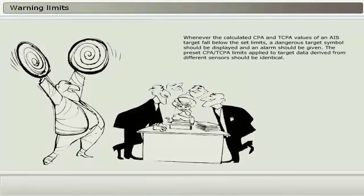Whenever the calculated CPA and TCPA values of an AIS target fall below the set limits, a dangerous target symbol should be displayed, and an alarm should be given. The preset CPA or TCPA limits applied to target data derived from different sensors should be identical.